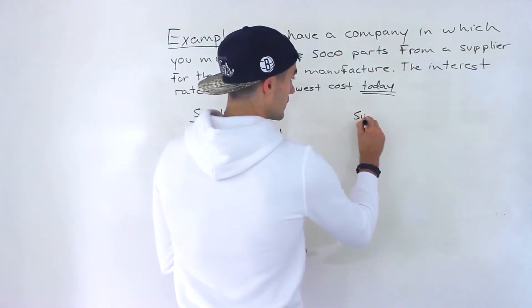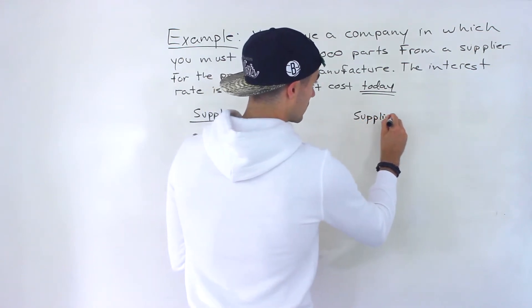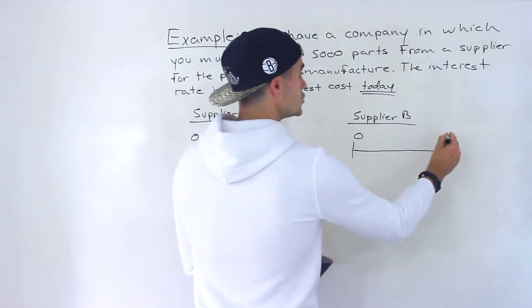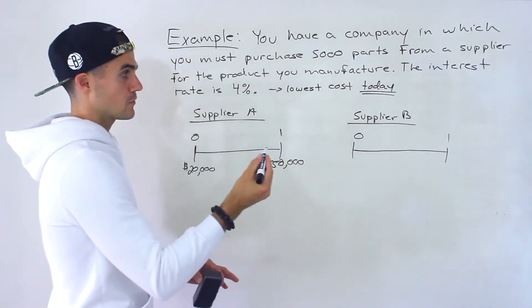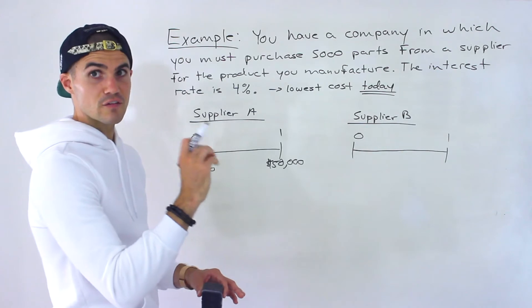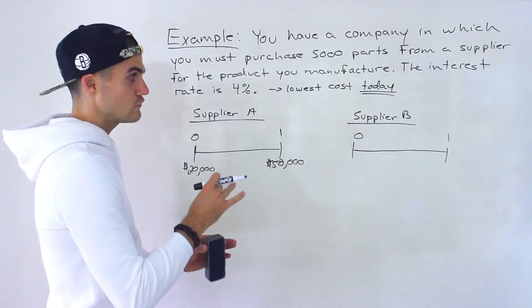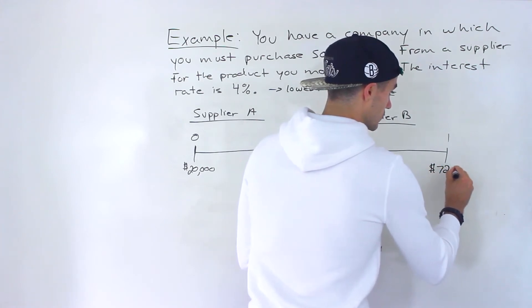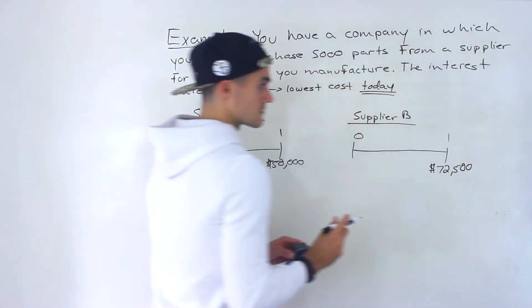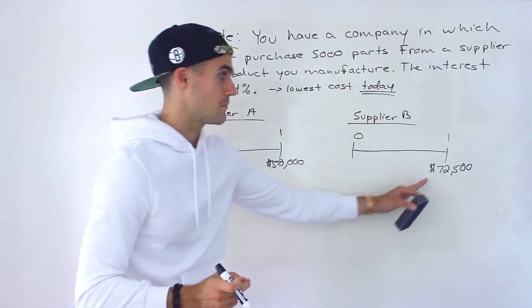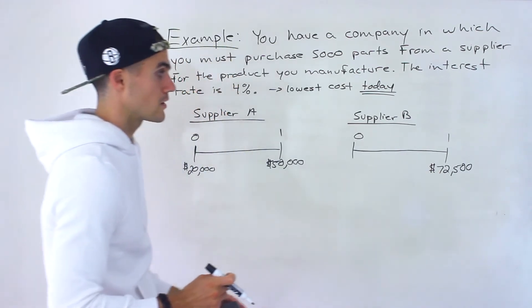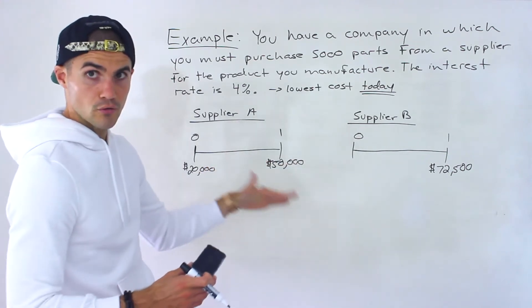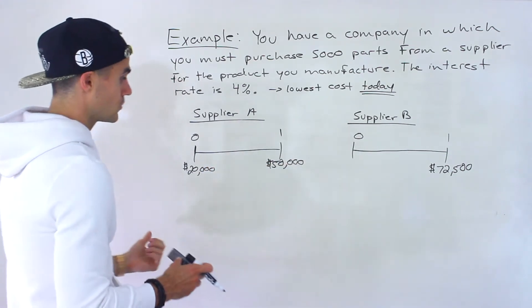With supplier B, there's no payment required today, but there is a payment in one year at $14.50 per part. So $14.50 times 5,000 gives us $72,500. That's the amount we're going to have to pay in one year with supplier B. We want to compare the present value of both costs and take the lowest.